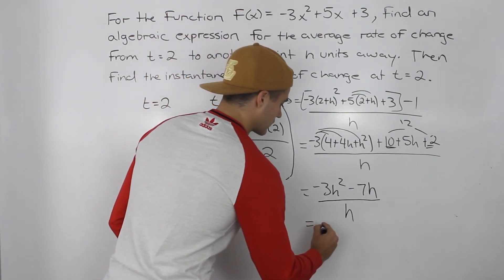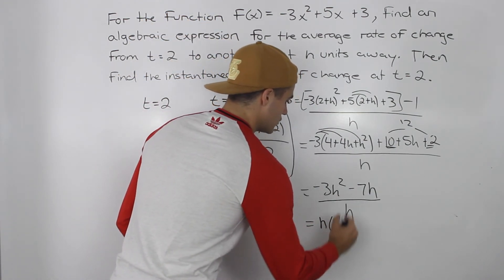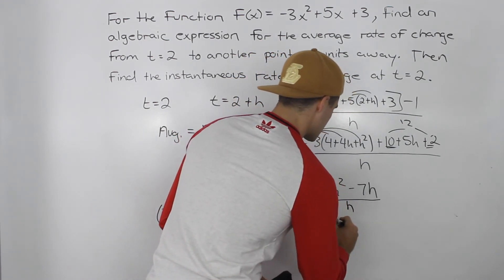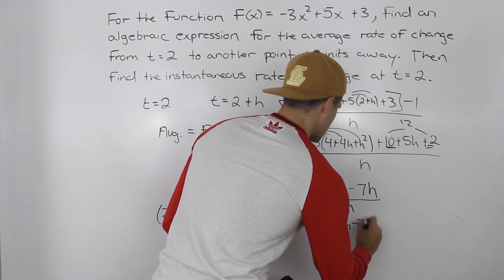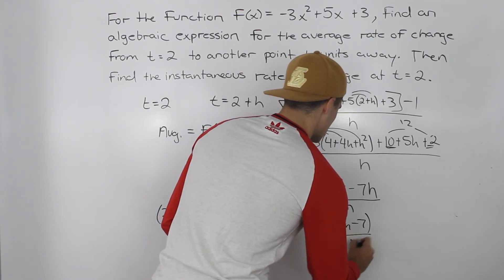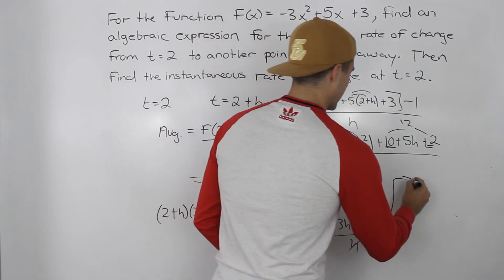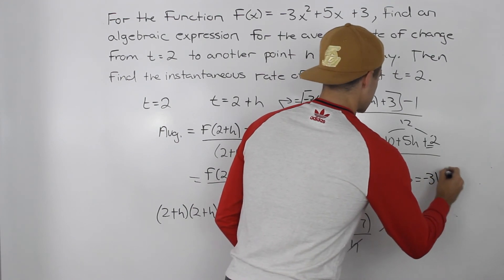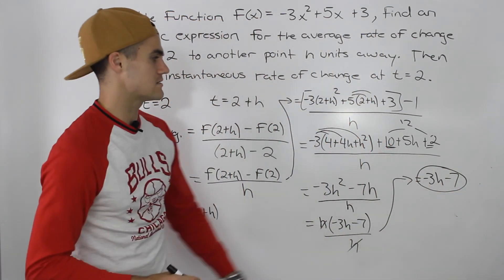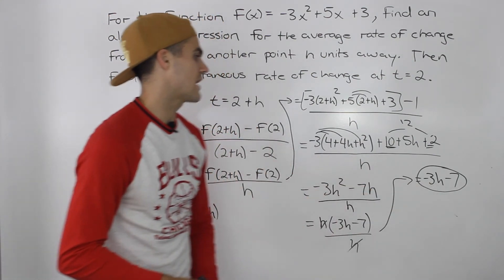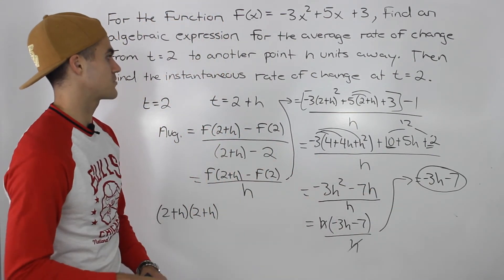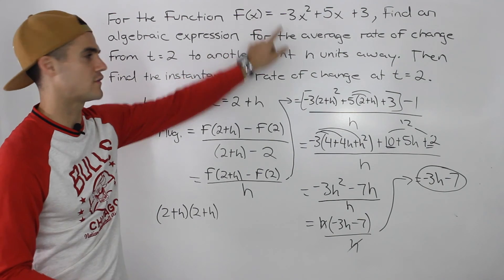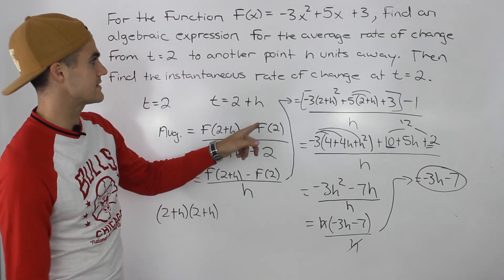Now we can factor out an h from the numerator, leaving us with h times (negative 3h minus 7), all over h. The h's cancel out, so our final answer is negative 3h minus 7. That is the simplified expression for the average rate of change between t equals 2 and t equals 2 plus h for this function.